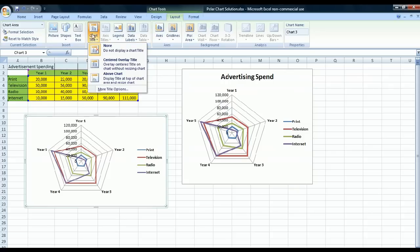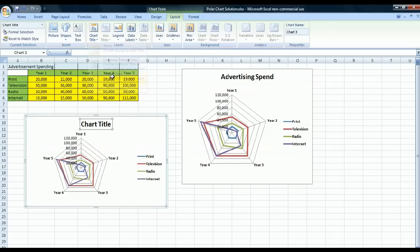So if we just select that, because there's a couple of different options, I just want to have it above the chart. So I'm just going to select that. Then we go in here, and we just type in whatever it is we want as our title. So, Advertising Spend.